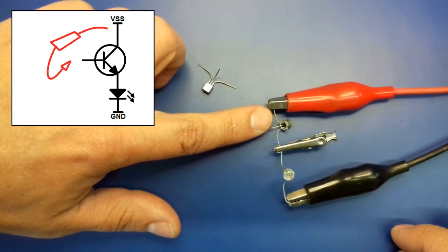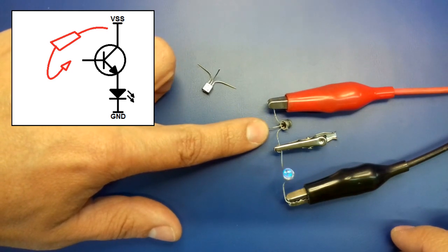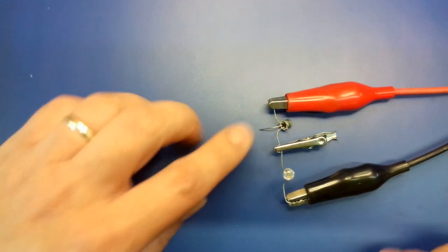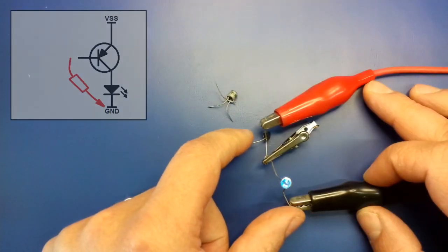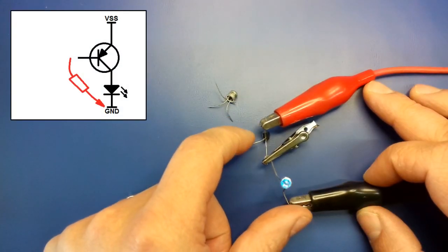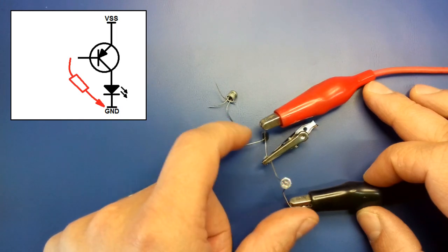And you only need about 0.6 volts to open the base emitter junction through the resistance of your skin. To bias a PNP transistor you would have to touch the base and the ground at the same time.